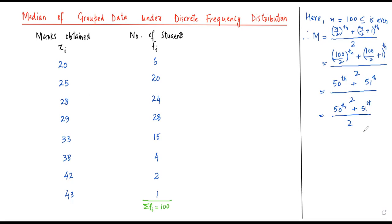By just looking at the data, you cannot easily identify the 50th observation. We need to do a bit more work. For this, we add one more column called cumulative frequency (cf).